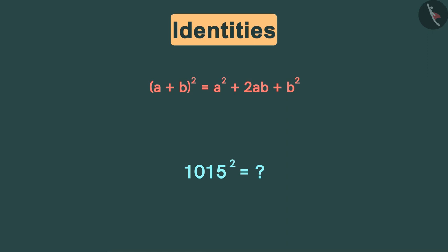Can you find the value of 1015 square? This identity makes it easier to find the solution of large numbers. Our first step will be dividing this large number into the sum of two simple numbers, so 1015 will be written as the sum of 1000 and 15.